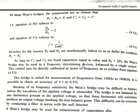The bridge is suited for the measurement of frequency from 100 hertz to 100 kilohertz. It is possible to obtain the accuracy of 0.1 to 0.5 percent. Because of frequency sensitivity in the Wien's bridge, it may be difficult to have a balancing balance point unless the waveforms of the applied voltage is sinusoidal. So we have a kind of difficulty in obtaining a balance point.